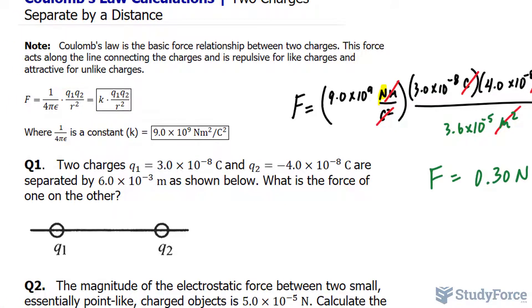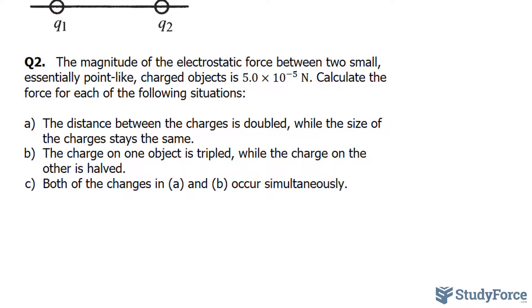Let's move on now to question 2. The magnitude of the electrostatic force between two small essentially point-like charged objects is 5.0 times 10 to the power of negative 5 newtons. Calculate the force of each on the following situations. In question A, the distance between the charges is doubled, while the size of the charge stays the same.